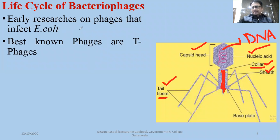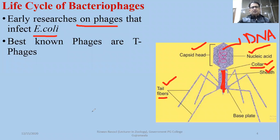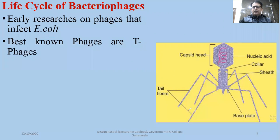Many researches have used Bacteriophages which infect E. coli. Bacteriophages are those viruses which infect bacterial cells; we call them Bacteriophages. Those bacteria are Escherichia coli bacteria. The best known phages available are called T-phages.